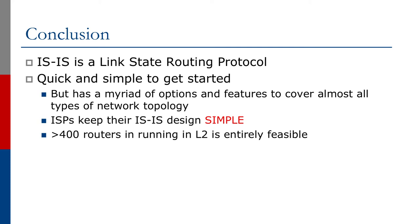To summarize: IS-IS is a link-state routing protocol that is quick and simple to get started with, but it has a myriad of options and features to cover almost all types of network topology. Network operators keep the IS-IS design very simple — most networks today can run the entire backbone in L2 only — and it has very much become the chosen IGP when operators are using both IPv4 and IPv6 in a dual-stack configuration.